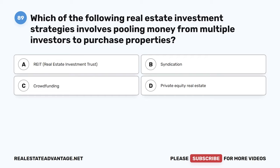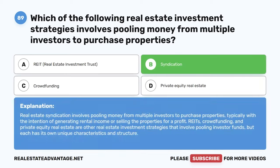Question 89. Which of the following real estate investment strategies involves pooling money from multiple investors to purchase properties? A. REIT — Real Estate Investment Trust. B. Syndication. C. Crowdfunding. D. Private Equity Real Estate. The correct answer is B: Syndication. Real estate syndication involves pooling money from multiple investors to purchase properties, typically with the intention of generating rental income or selling the properties for a profit. REITs, crowdfunding, and private equity real estate are other strategies that involve pooling investor funds, each with its own unique characteristics and structure.